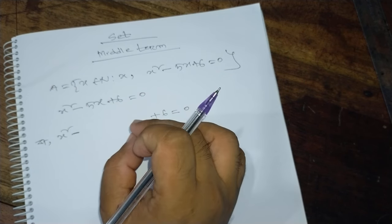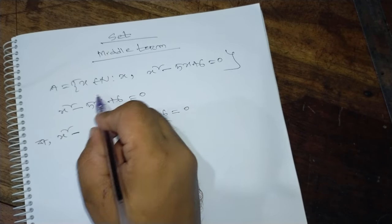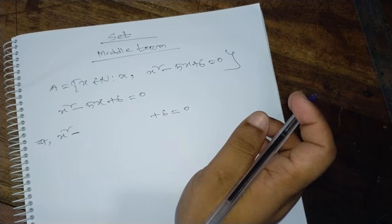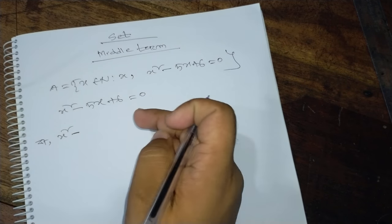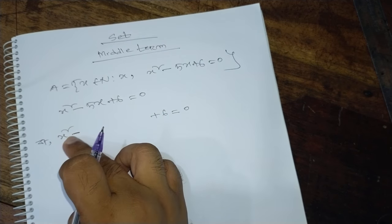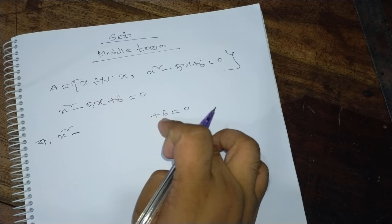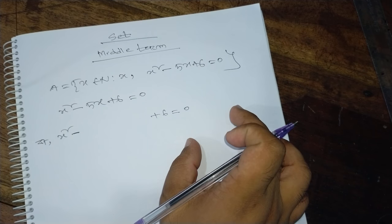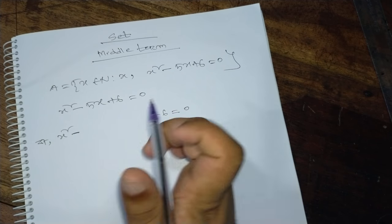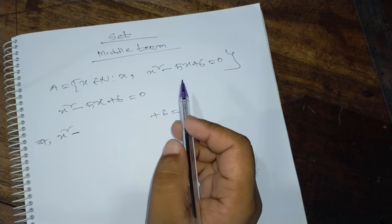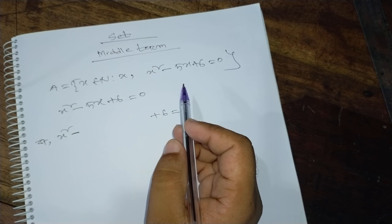Which means 2, so that we will do the same number, so we can do this. Let's say x squared minus — plus 6 equals 0, so we will ask for the middle term first of all.